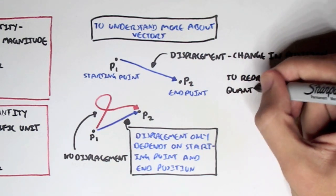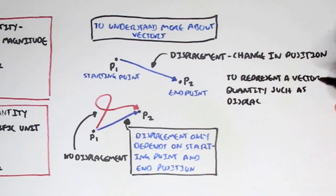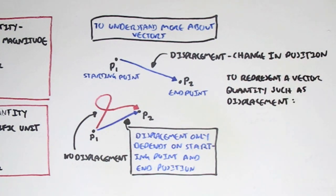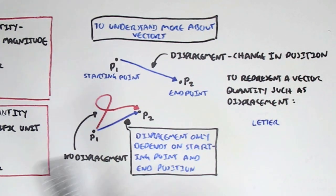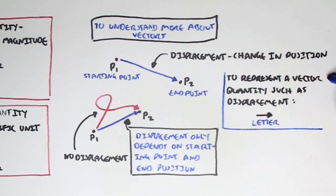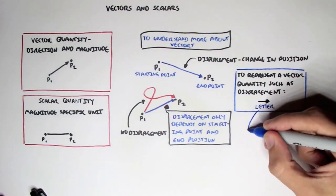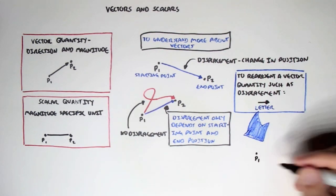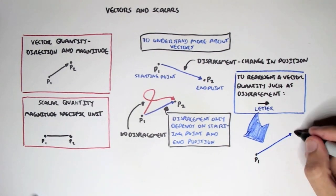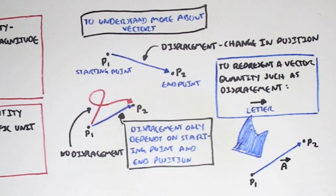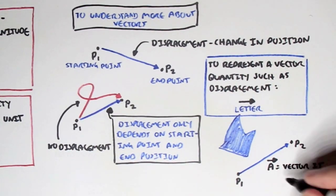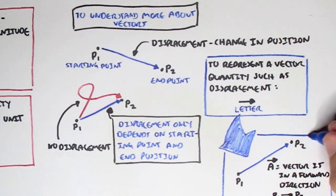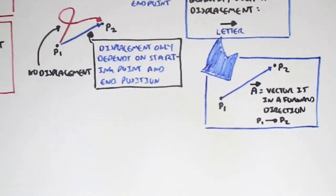To represent a vector quantity such as displacement, we usually have a letter with an arrow above it pointing to the right direction to represent forward. So for example, if here's point 1 and here's point 2, and our vector is travelling this way, we can represent the displacement as 'a' with an arrow pointing to the right. This vector is in a forward direction because it's pointed to the right — usually right represents forward.